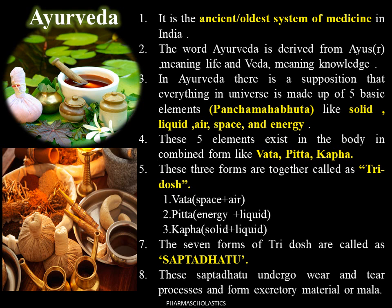Ayurveda is the ancient, oldest system of medicine in India. The word Ayurveda is derived from ayur meaning life and veda meaning knowledge. In Ayurveda, everything in the universe is made up of five basic elements called Pancha Mahabhuta: solid, liquid, air, space, and energy. These five elements exist in the body in combined forms known as Vata, Pitta, and Kapha — together called the three doshas. Vata is made up of space and air, Pitta of energy and liquid, and Kapha of solid and liquid.